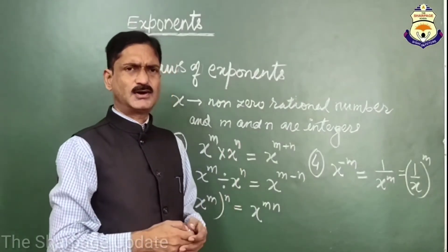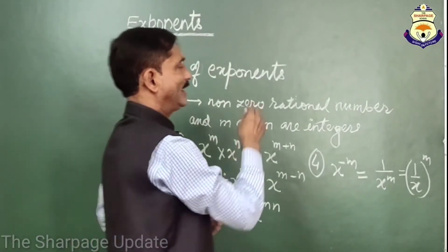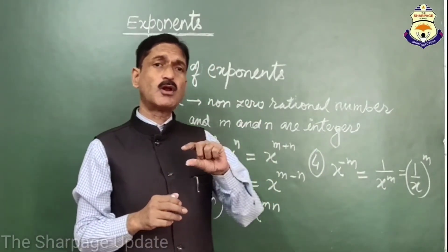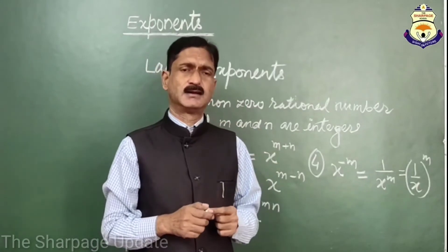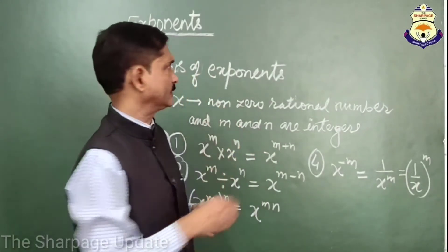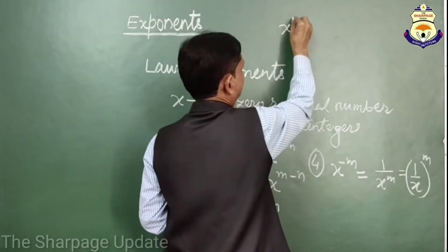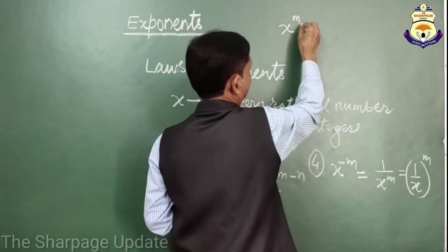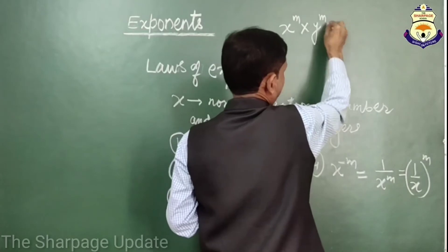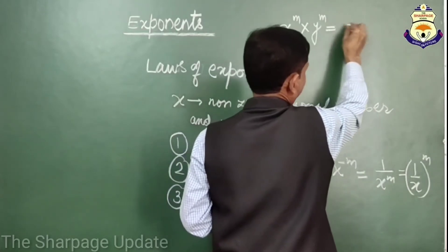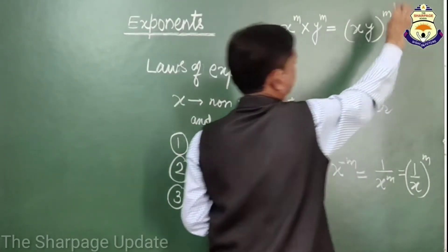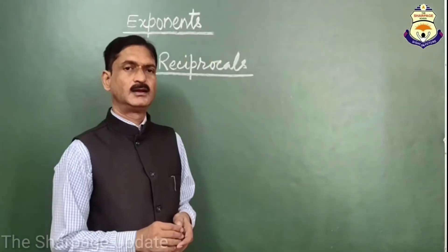So these are some basic laws of exponents by which we can solve any problem related to powers and exponents. Some other laws: if x and y are two non-zero rational numbers and m is an integer, then x to the power m multiplied by y to the power m can be written as (xy) to the power m.